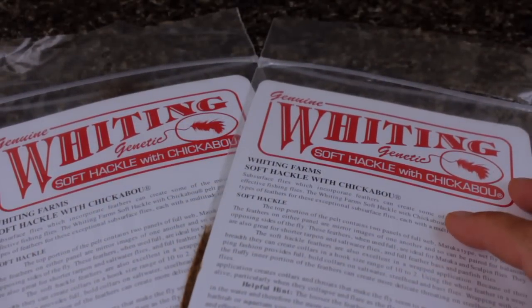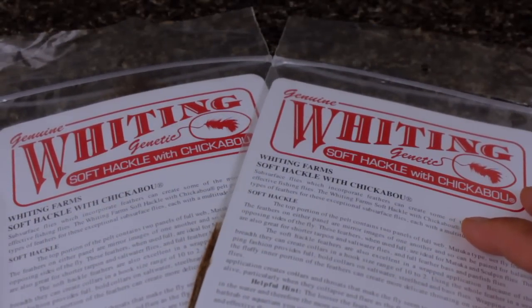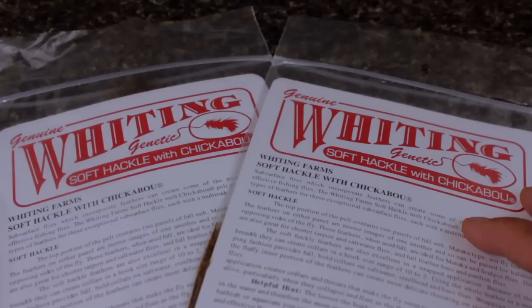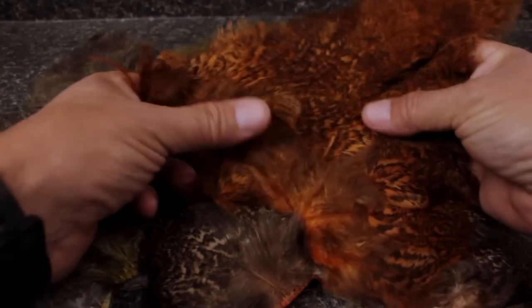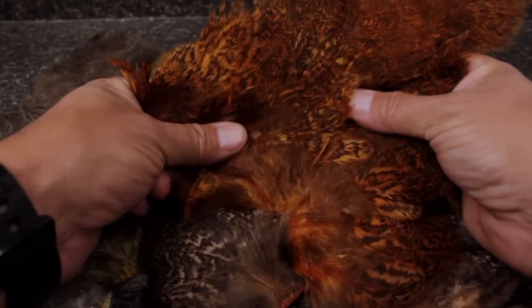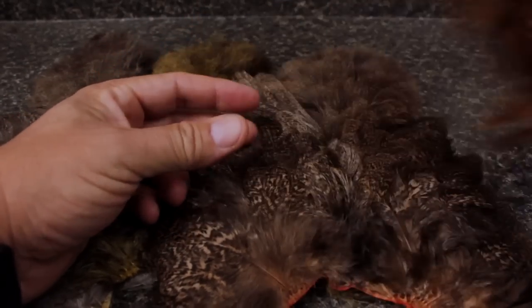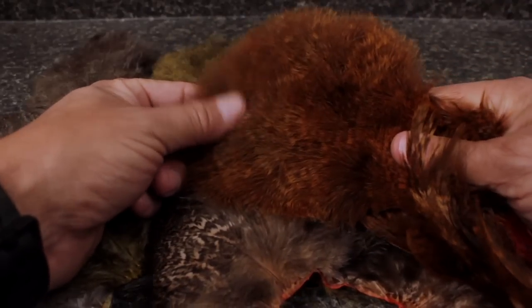With the exception of some pearl crystal flash, the entire fly is built with feathers from a Whiting Farms soft tackle with chickabou pelt. These pelts are available in a wide range of colors and include both soft tackle feathers as well as chickabou, which resembles marabou.